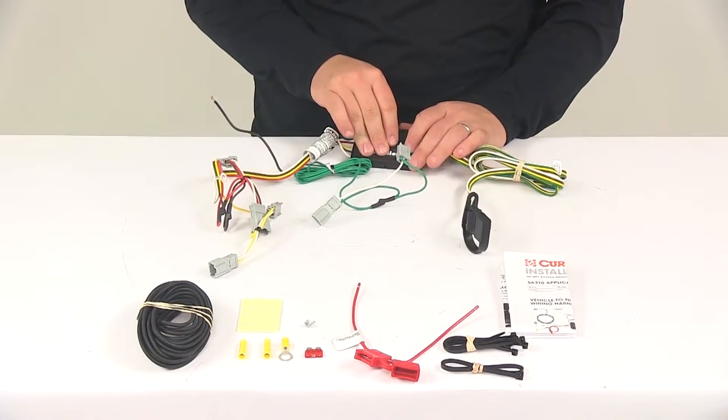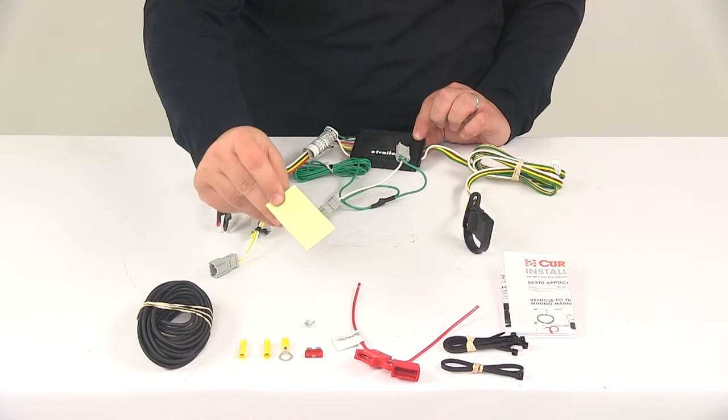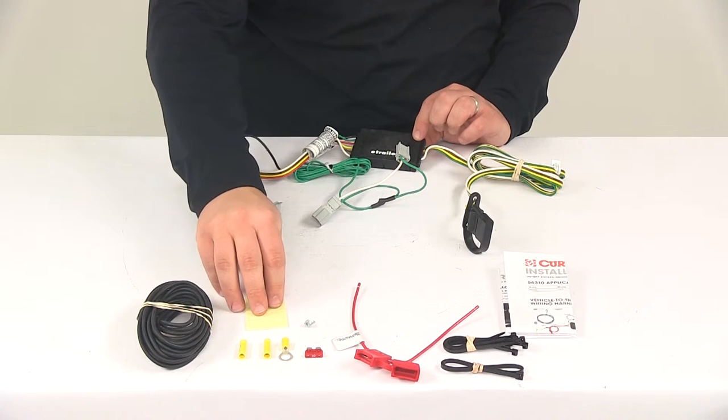Then you'll need to mount your converter box. You want to get this mounted to a nice clean out-of-the-way location, and you can do that by using the double-sided adhesive tape that's provided with the kit.